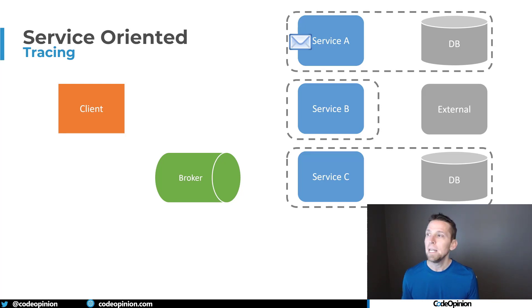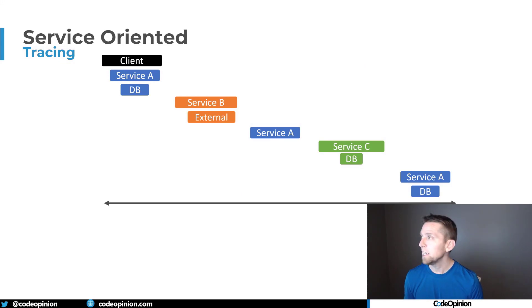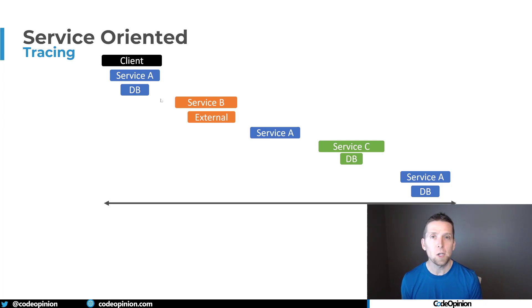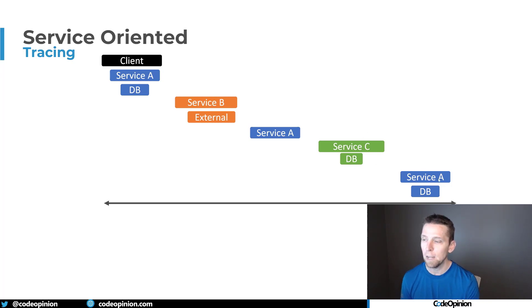Distributed tracing is still really important here because we want to see the entire workflow. The trace shows the client making the initial call, service A interacting with the database and sending a message to the broker. There may be a span of time where nothing occurs because the message is sitting in the queue and service B hasn't picked it up yet. Once it does, it does its work, sends a reply, service A picks it up, sends the message for service C, which does its work with its database and replies, and service A marks the process complete. This looks very different from the synchronous trace.